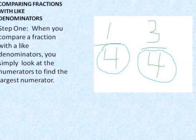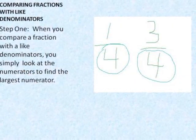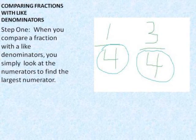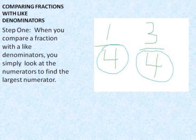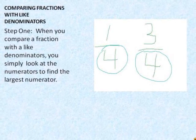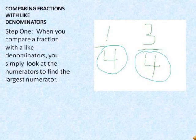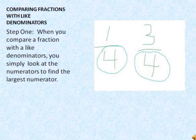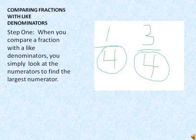When you compare fractions with a like denominator, you simply look at the numerators. In this example, 1 fourth and 3 fourths, 4 is your denominator. So we just look at the numerator, the 1 and the 3, and we find that 3 fourths is greater than 1 fourth.